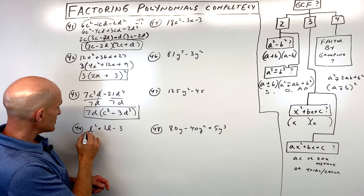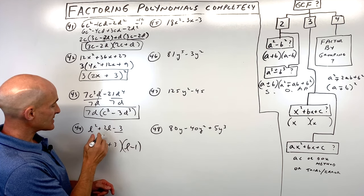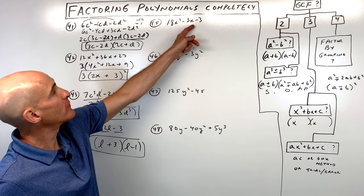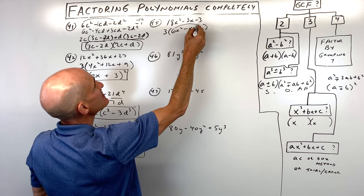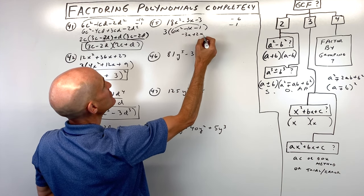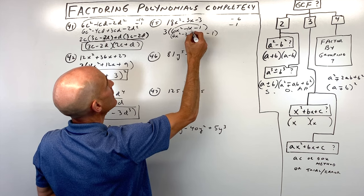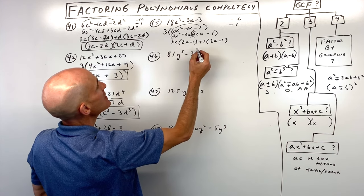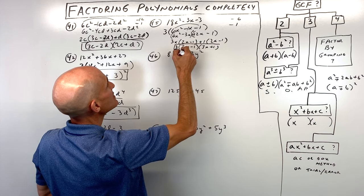Number forty-four is a trinomial with leading coefficient 1. What multiplies to negative 3 but adds to positive 2? That's 3 and negative 1 — so l plus 3 times l minus 1. Number forty-five is a trinomial where we can factor out a 3 first. Then inside: multiply a and c — what multiplies to negative 6 but adds to negative 1? That's negative 3 and positive 2. Split the middle term, factor by grouping, factor out 3x to get 2x minus 1, factor out 1 to get 2x minus 1. Result: 3 times 2x minus 1 times 3x plus 1.